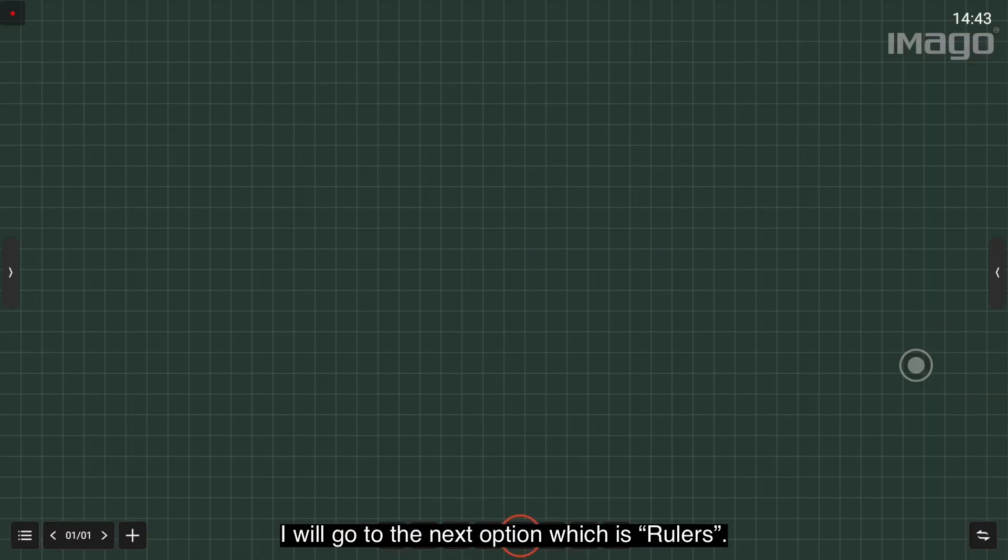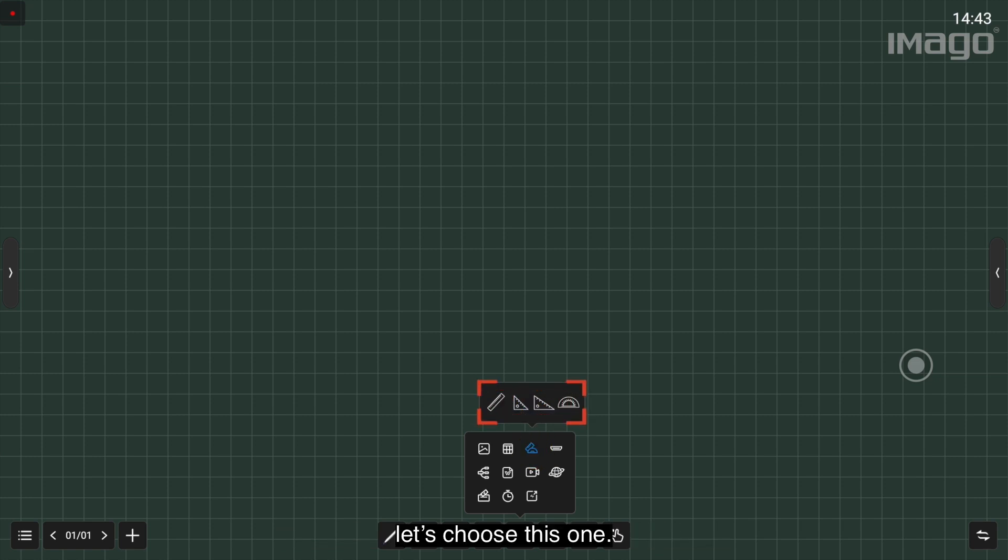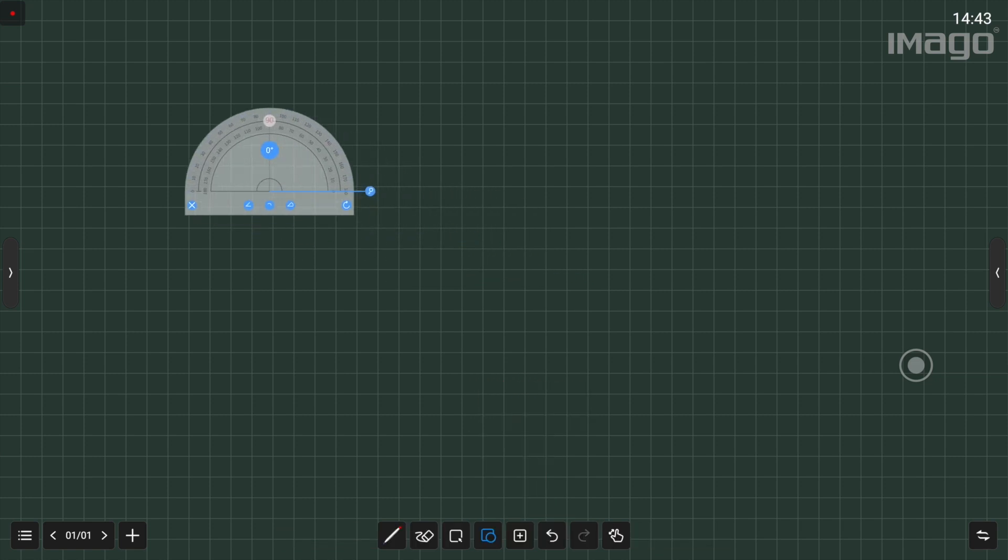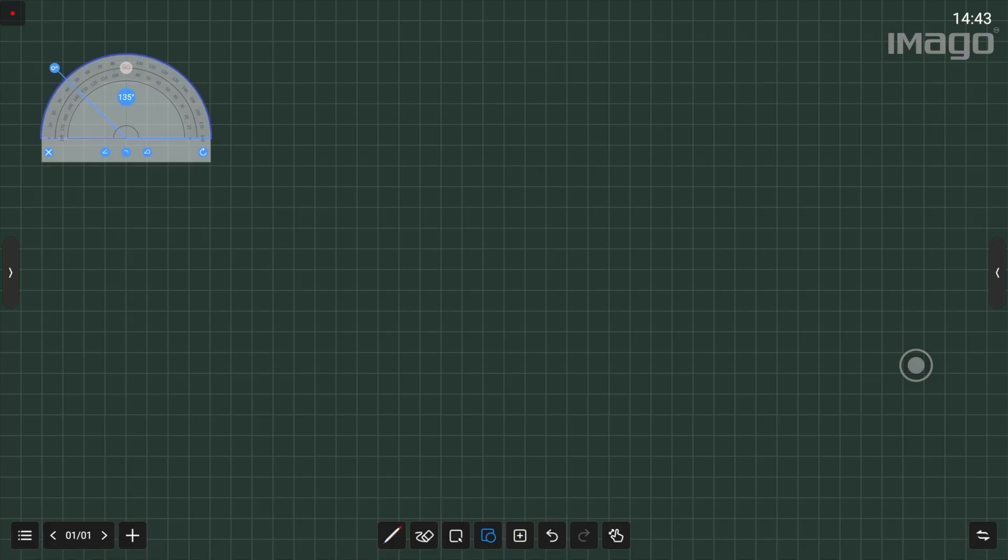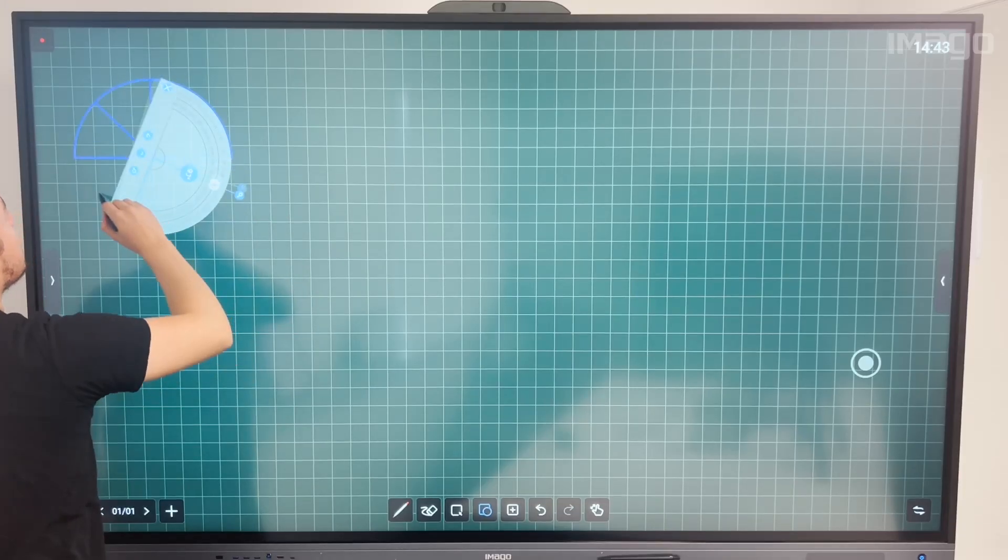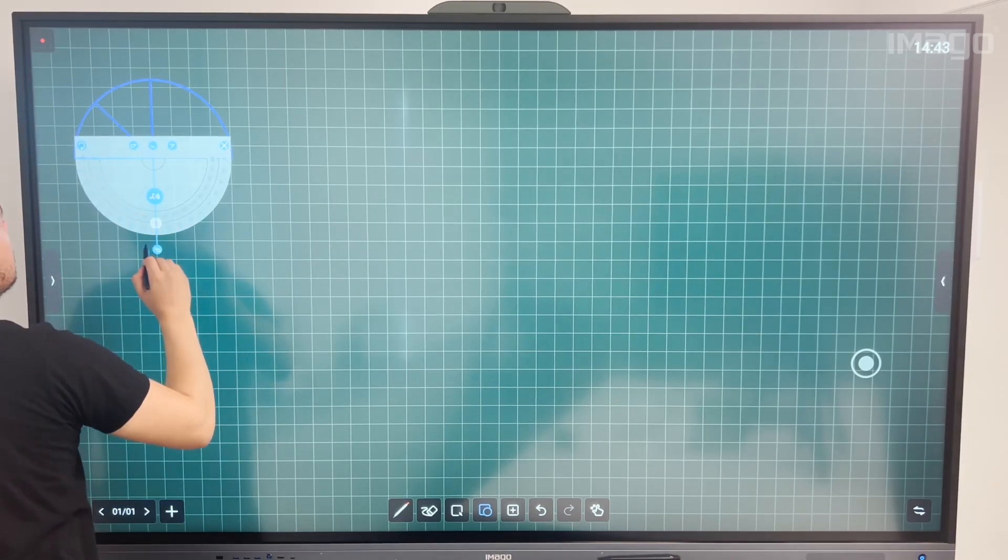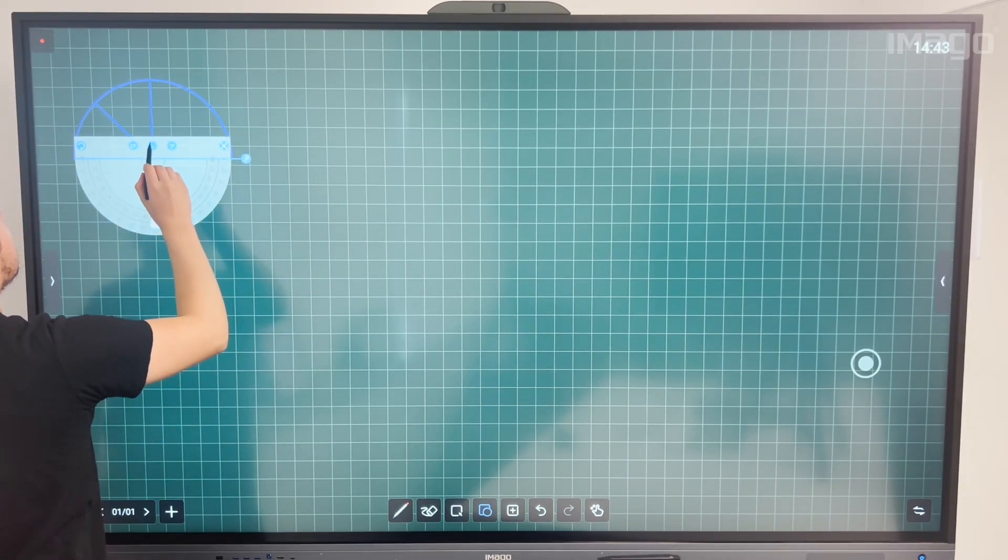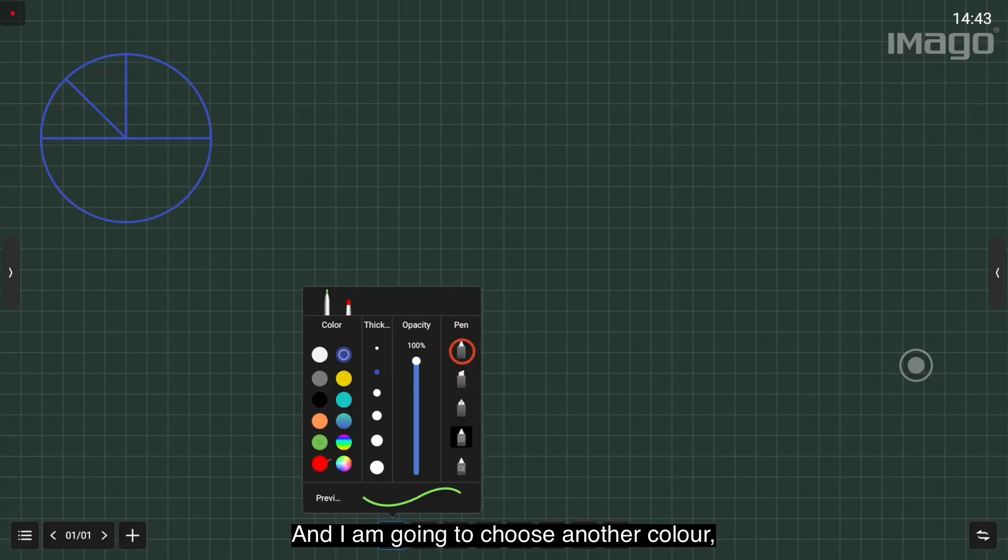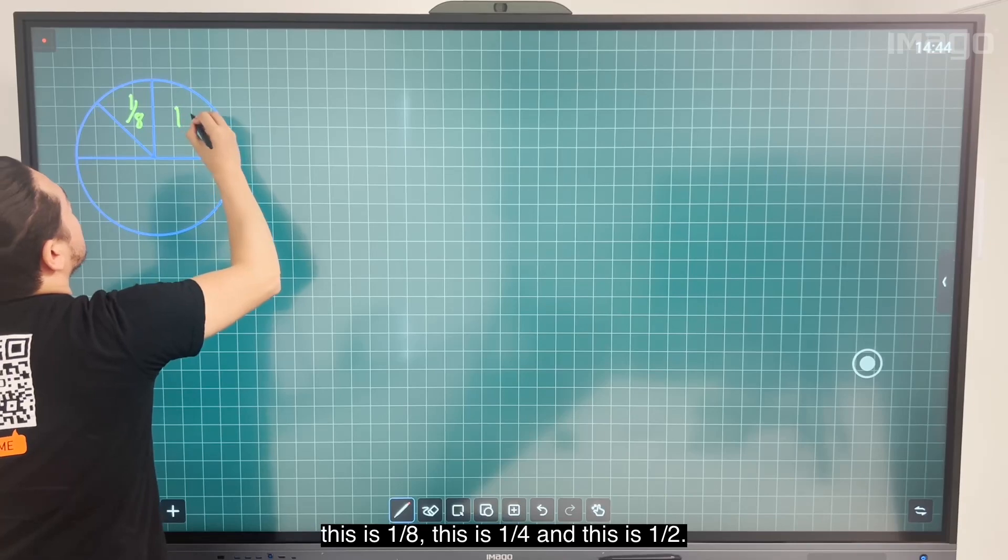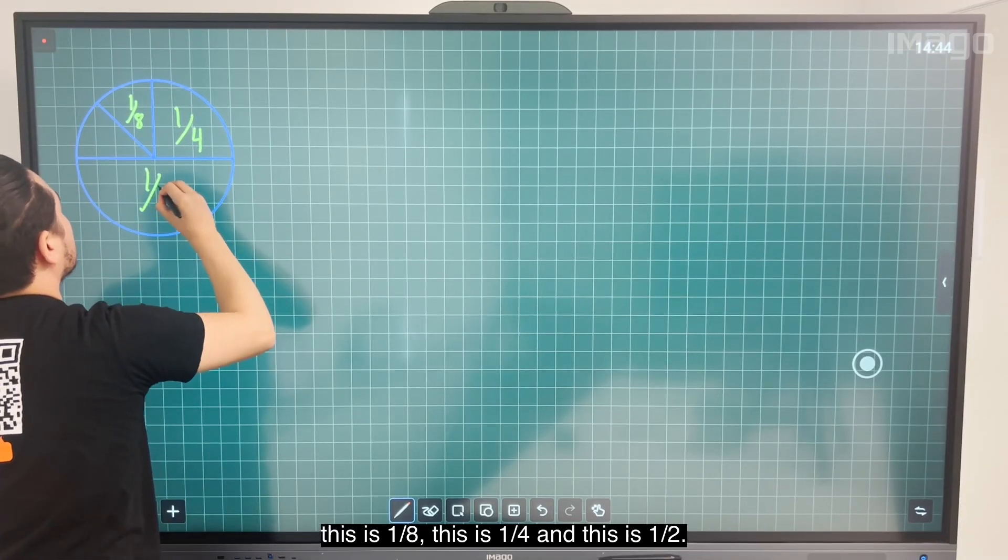Now that we have more space, I'll go to the next option which is Rules. We have different kinds of rulers. Let's choose this one. I'm going to choose another color. This is one of eight, this is one four, and this is one out.